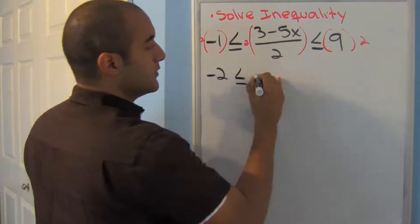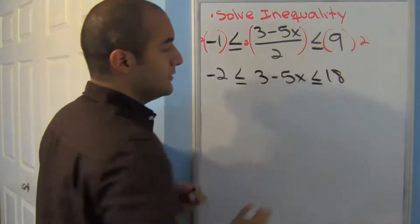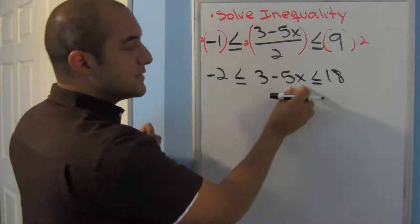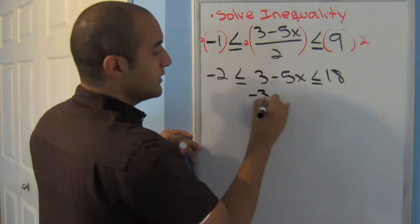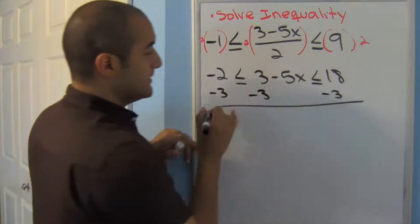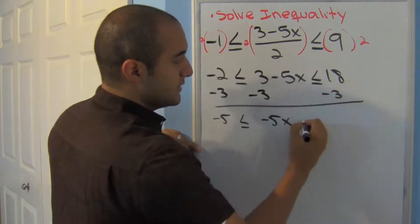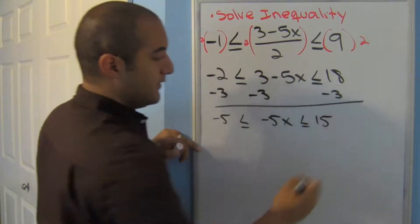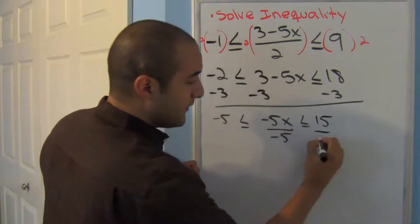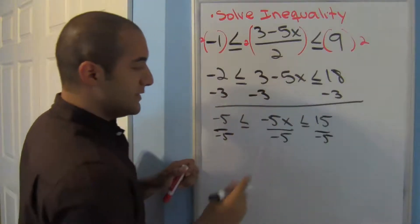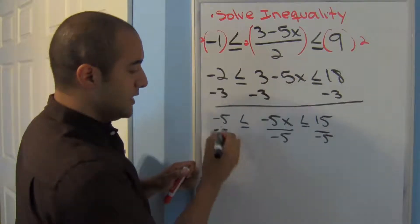After multiplying everything by 2, I end up getting negative 2 less than or equal to 3 minus 5x less than or equal to 18. I always save that middle term for last, so I'll get rid of the positive 3 by subtracting 3 from all three sides: negative 5 less than or equal to negative 5x less than or equal to 15. Now I need to divide by negative 5 on all three sides.